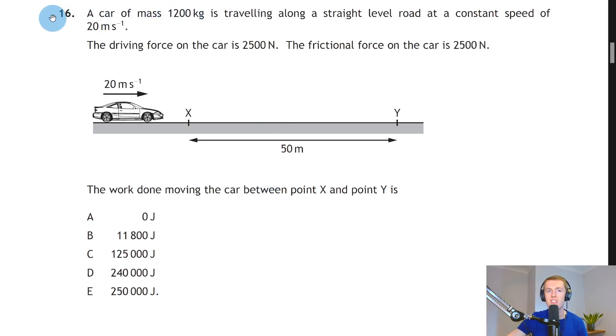Here is question 16 from the 2015 SQA National 5 exam paper. A car of mass 1200 kg is traveling along a straight level road at a constant speed of 20 m/s. The driving force on the car is 2500 N, the frictional force on the car is also 2500 N. Between X and Y the car is traveling a distance of 50 m. The work done moving the car between point X and point Y is...